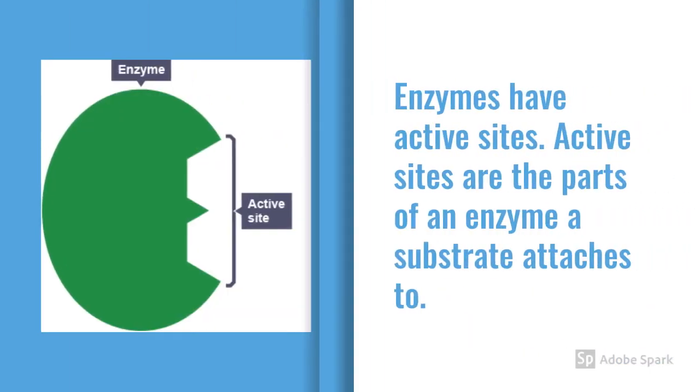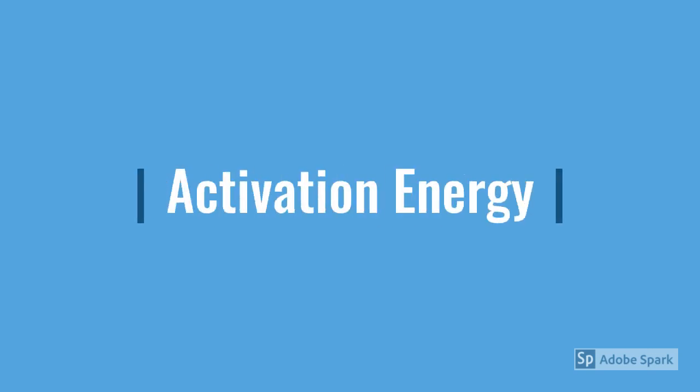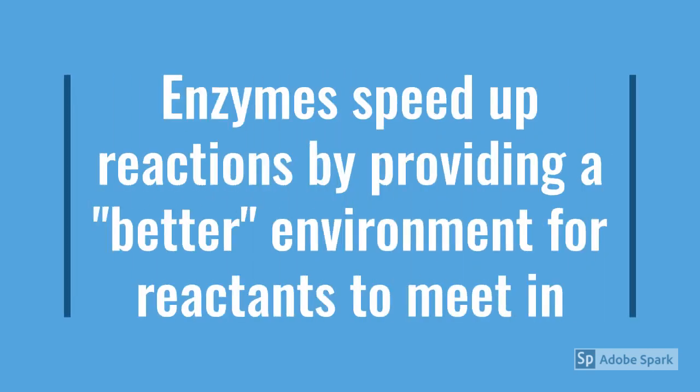Enzymes have something called active sites. The active sites are basically where the substrates attach to the enzyme — if you look at the diagram you'll be able to see exactly what I'm talking about. Activation energy is the minimum energy required for a reaction to occur, and enzymes are really important when it comes to activation energy. Enzymes lower the activation energy required for a reaction to occur, which then speeds up the reaction.